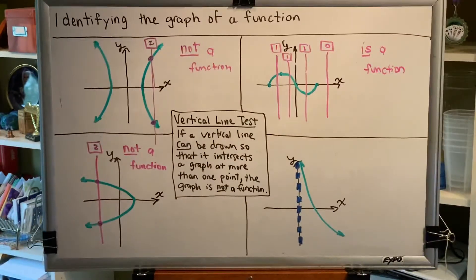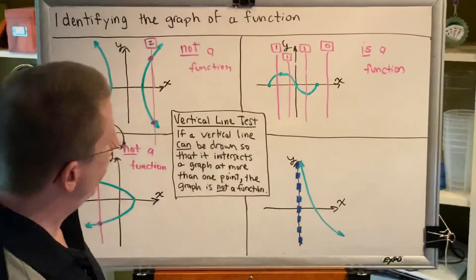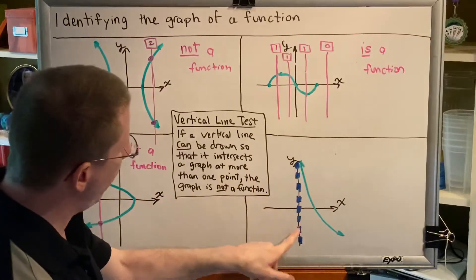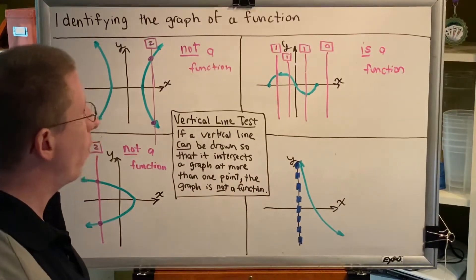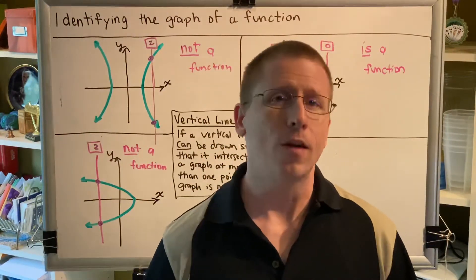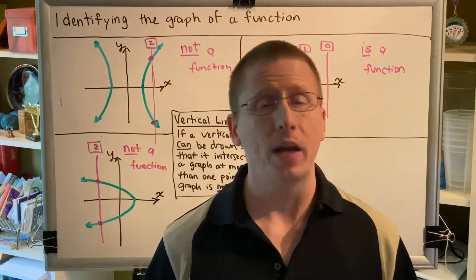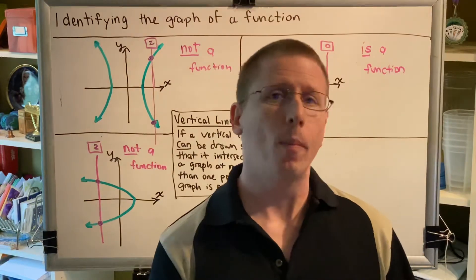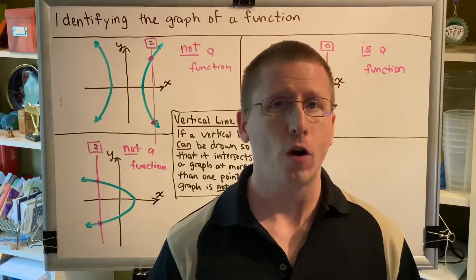And then our last graph is the most interesting one. This graph has a vertical asymptote sitting on top of the y-axis. Let's talk about what that means. A vertical asymptote is a vertical line that your green curve forever approaches but never reaches.